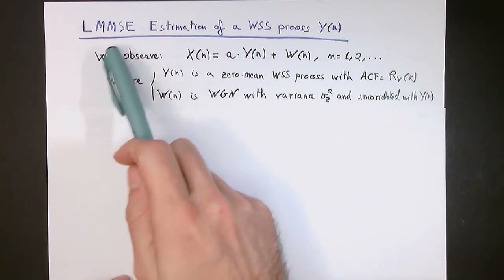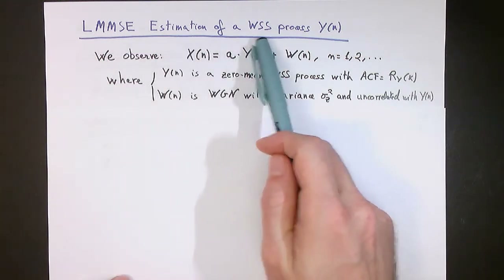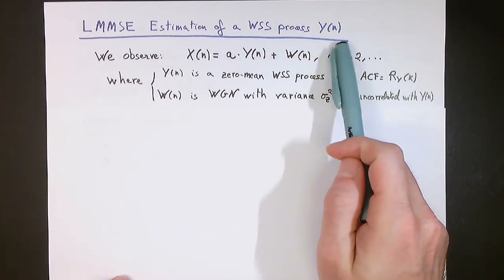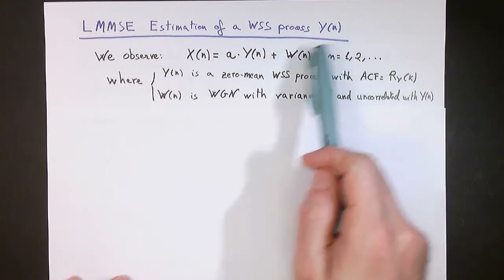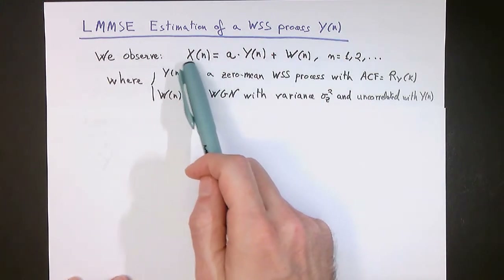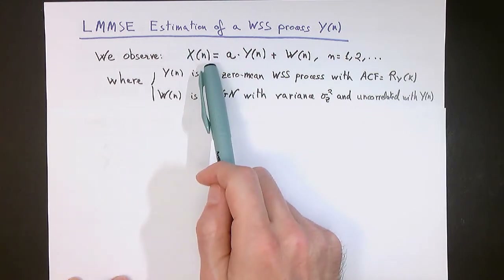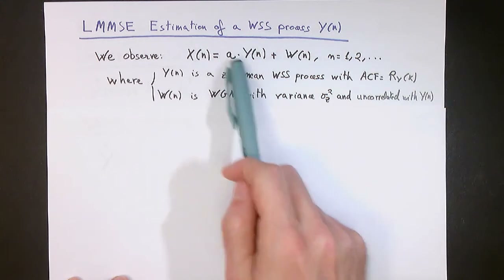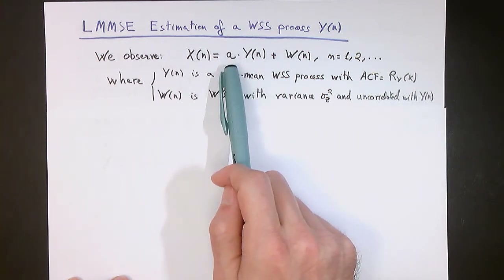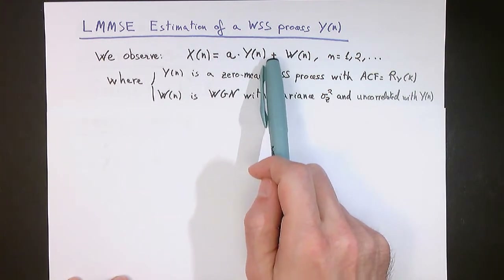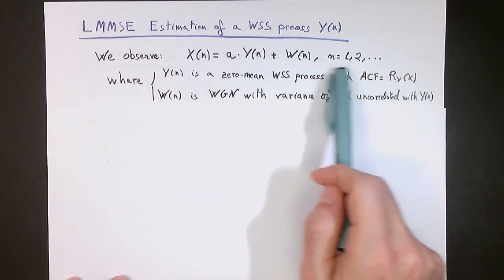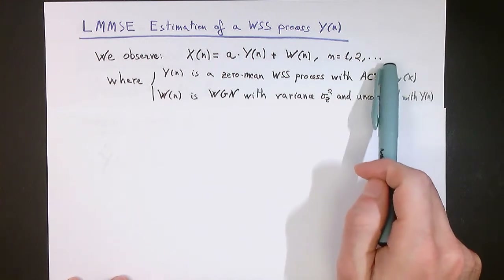Consider that we're in a situation in which we would like to estimate the samples of a wide sense stationary process y of n. In order to do so, we can observe samples of a process x of n, which consists of a weighted version of our process of interest y of n, weighted by the constant a, to which a noise process w of n is added. And we can observe a number of samples of such process.